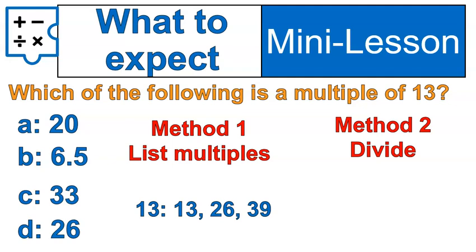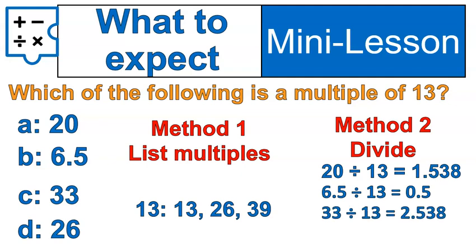Another way you can find if a number is a multiple of 13 would be to use division, and that's our second method. So I could take each of those options, A, B, C, D, and divide them by 13. Watch what happens. 20 divided by 13 gives me 1.538. 6.5 divided by 13 is 0.5. 33 divided by 13 is 2.538, and 26 divided by 13 is 2. The only number that gives you a whole answer response is the multiple.